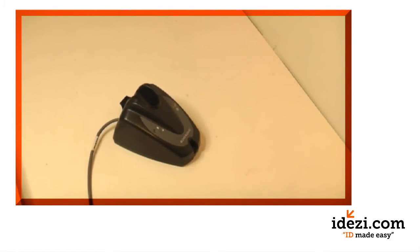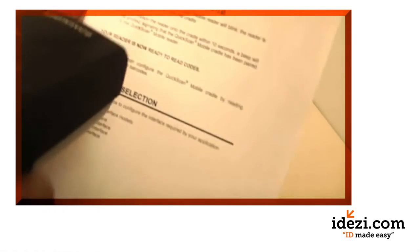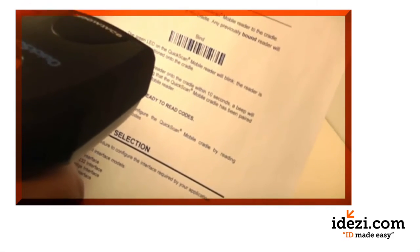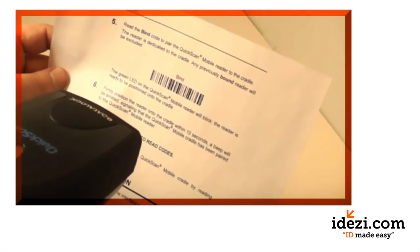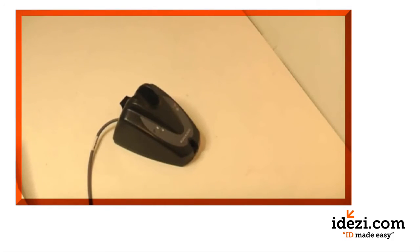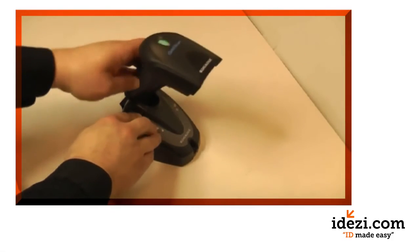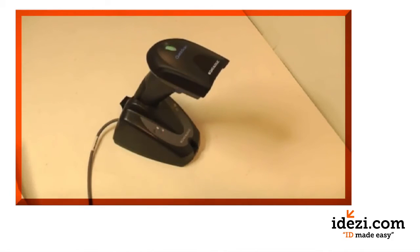Now go to page 8. Scan the Bind barcode and place the scanner immediately in the cradle. It should give you a short beep if it binds correctly. Otherwise, it will give you a high-low error tone.